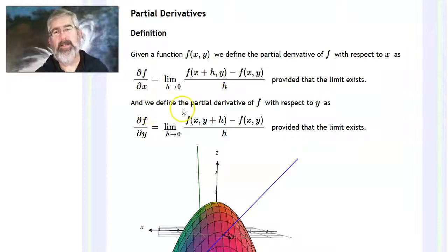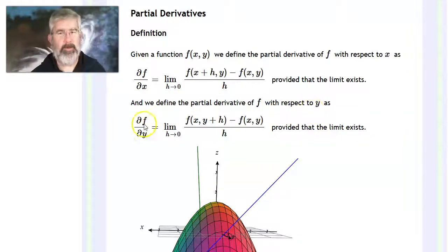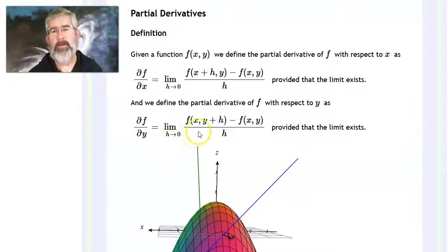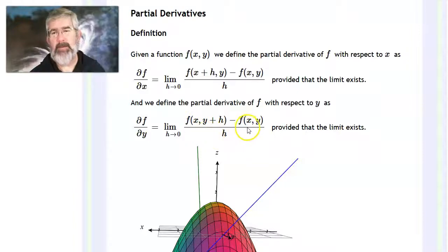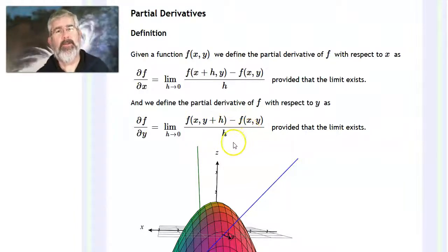Likewise, we define the partial derivative of f with respect to y as the limit as h goes to 0 of f(x, y+h) minus f(x, y), over h. In this one, x is the same in both terms and it's the y that's changing — so this is just the derivative in the y direction.